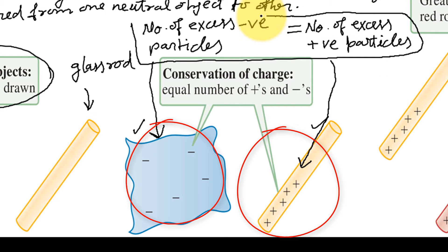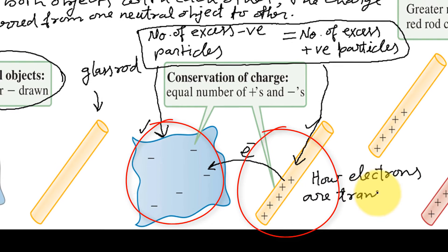Basically in rubbing, the electrons transferred from one body to other. Now question is: how electrons are transferred and from which body?